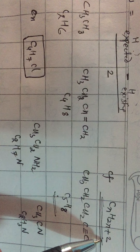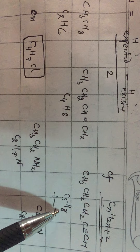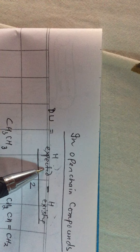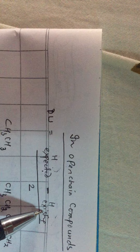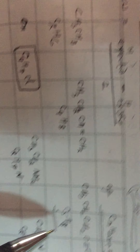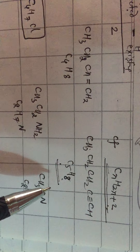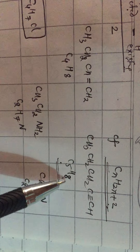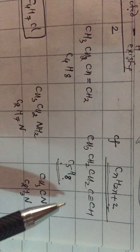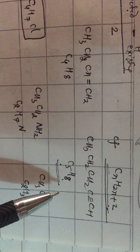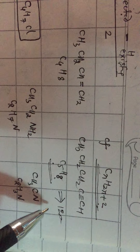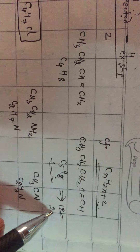So for C5H8, the expected hydrogens are 12 and existing hydrogens are 8. Applying the formula: (12 - 8) / 2 = 2. It means C5H8 has two pi bonds. The number of sigma bonds is total number of atoms (5 + 8 = 13) minus 1, which equals 12. So it implies 12 sigma bonds and 2 pi bonds.